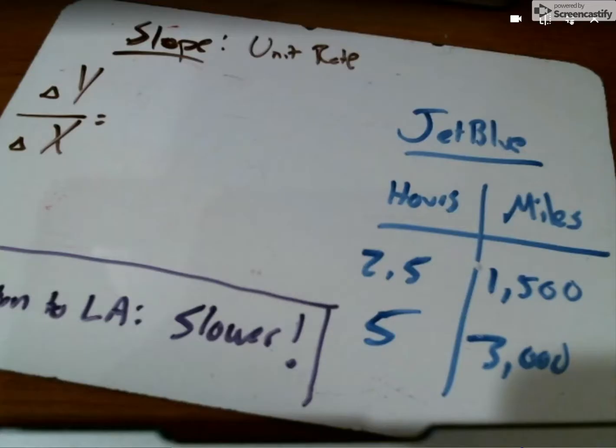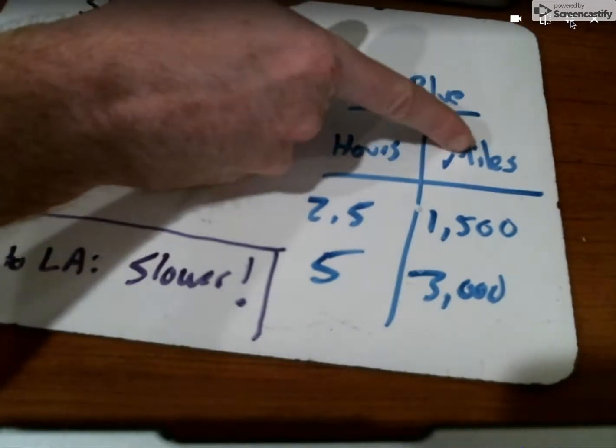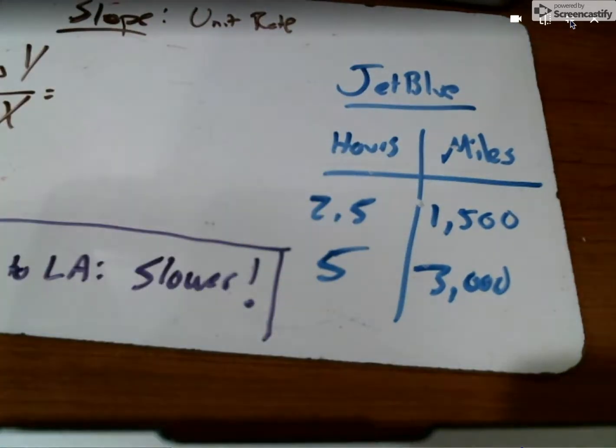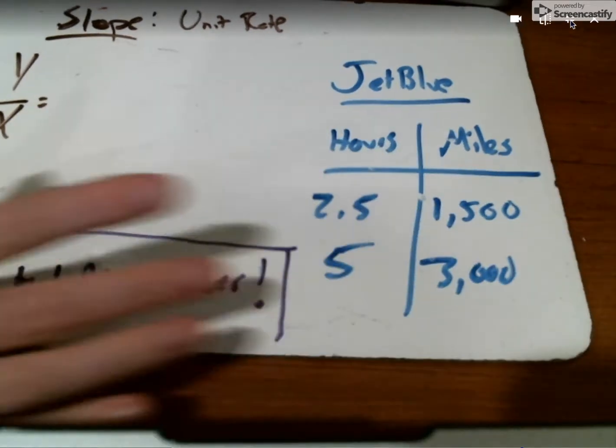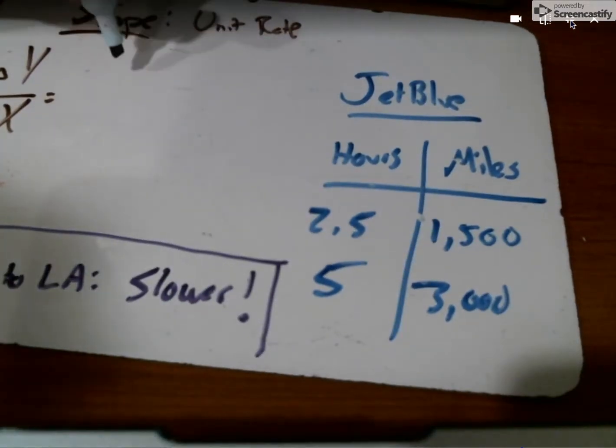We'll take a look at the whiteboard in full screen now. Because JetBlue's distance compared to its hours is proportional, I can use any one data point to find slope. I'm going to use 3,000 divided by 5, which would give me the same ratio as any other data point from that graph.